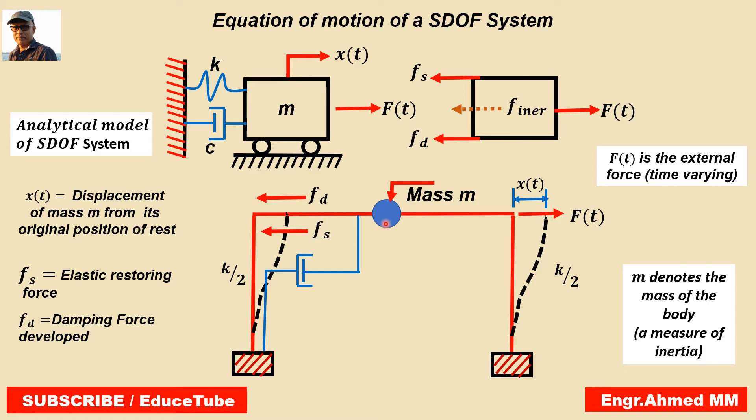Also, if we consider that the axial rigidity of the beam and slab, as I told this line represents beam and slab, is very large in comparison with the stiffness of the column in the lateral deformation.